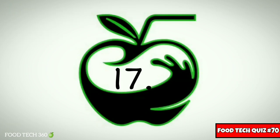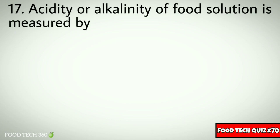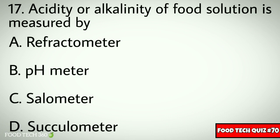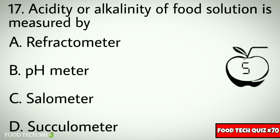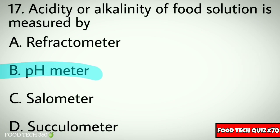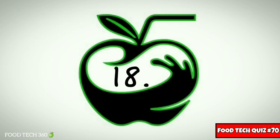Q17. Acidity or alkalinity of a food solution is measured by dash. Options: A. Refractometer, B. pH meter, C. Salometer, D. Swigilometer. Correct answer: B. pH meter.